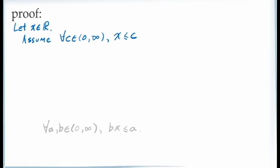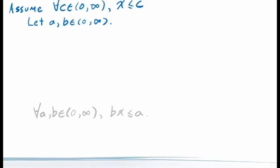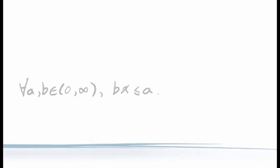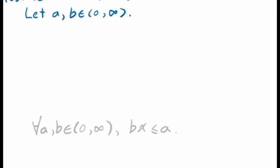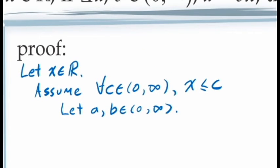At this point, we need to introduce into our proof two more arbitrary constants, a and b. We do this with a statement that says: let a and b be elements of the interval from 0 to infinity. For these values of a and b, we're now required to demonstrate that b times x must be less than or equal to a. In order to demonstrate this, we're going to need to make use of our assumption. Since our assumption includes a universal quantifier, we need to use the principle of universal instantiation — meaning to use that assumption, we need to talk about some specific value of c, and the difficulty is knowing which value of c will lead us to the information we need.